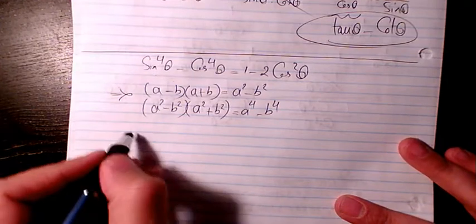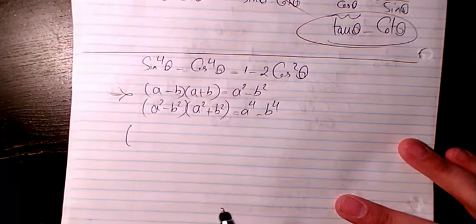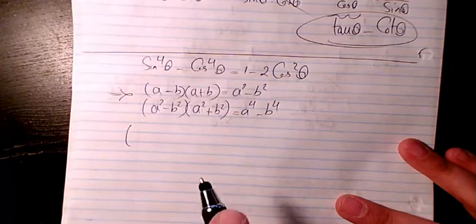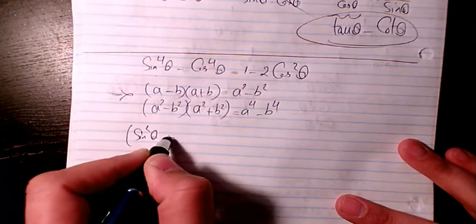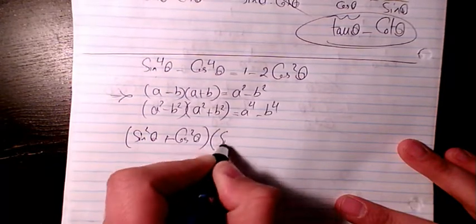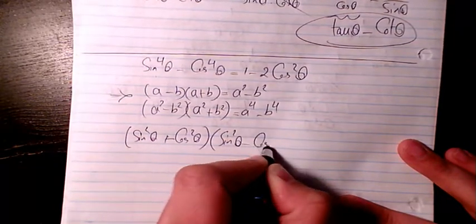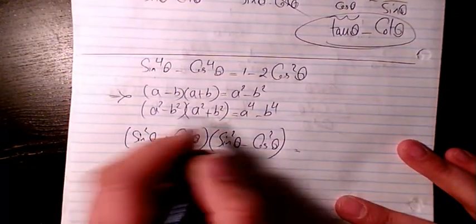So that's what we have here. I can decompose the left-hand side of this equation and write sine squared theta plus cosine squared theta times sine squared theta minus cosine squared theta, which is what we have right now.